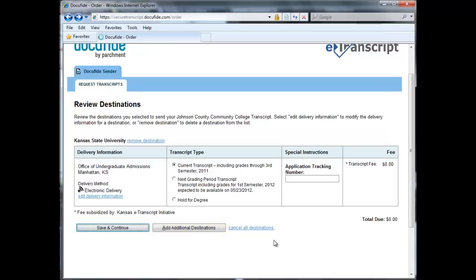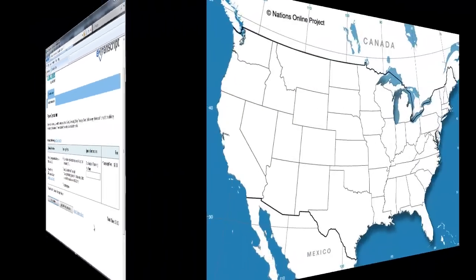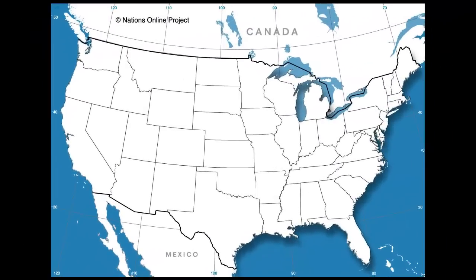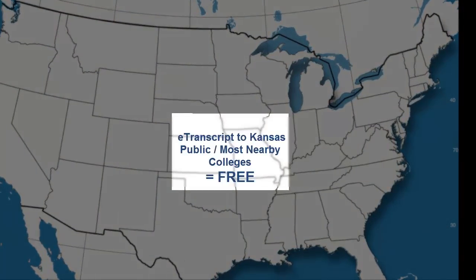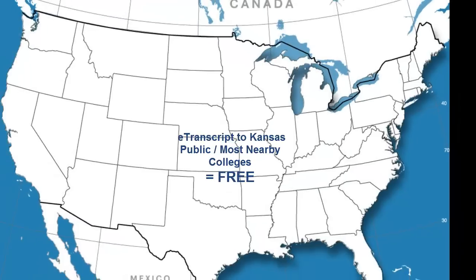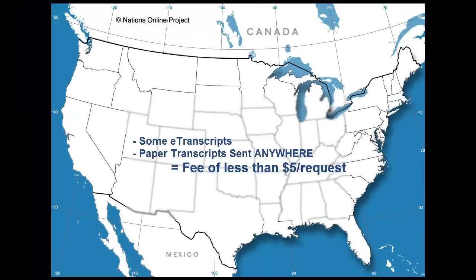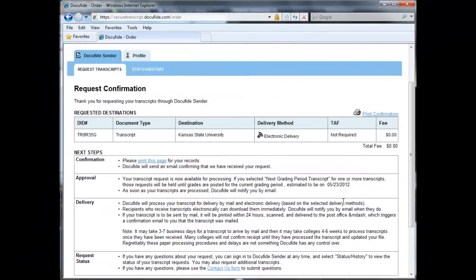Once you hit Save and Continue, your request has been submitted to the college. Transcript fees range in cost depending upon the delivery method selected and the destination. Most transcripts sent electronically to nearby colleges are free for JCCC students. Some requests, including e-requests to yourself or to have a paper transcript mailed to anyone, will include a nominal fee of less than $5 per transcript request. It normally takes three business days for us to process your request.